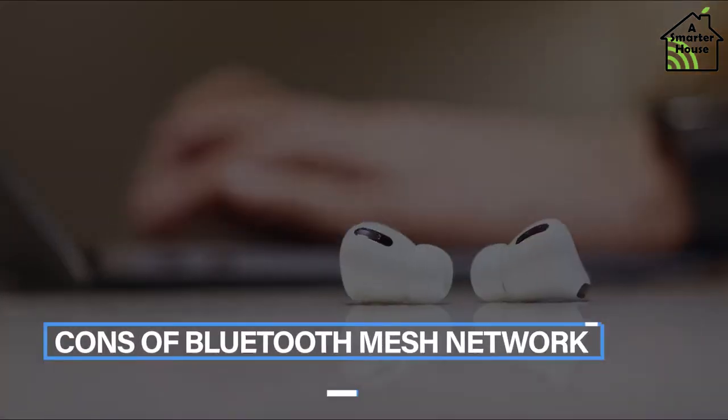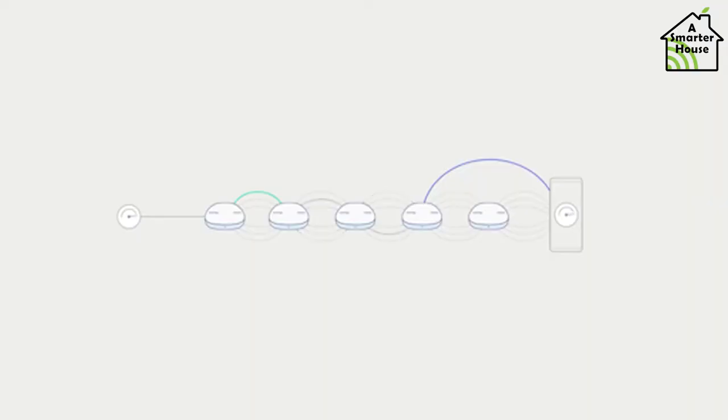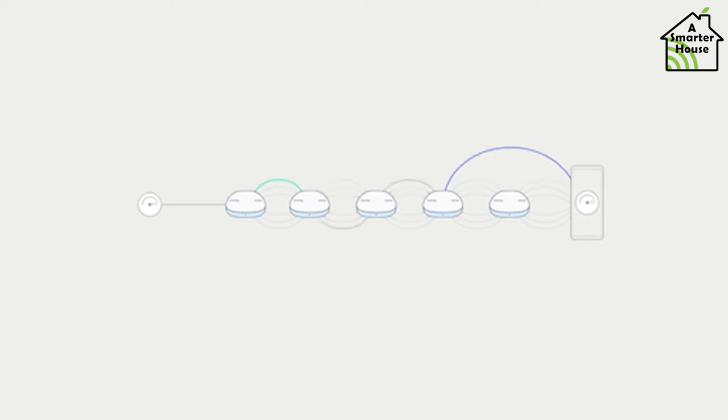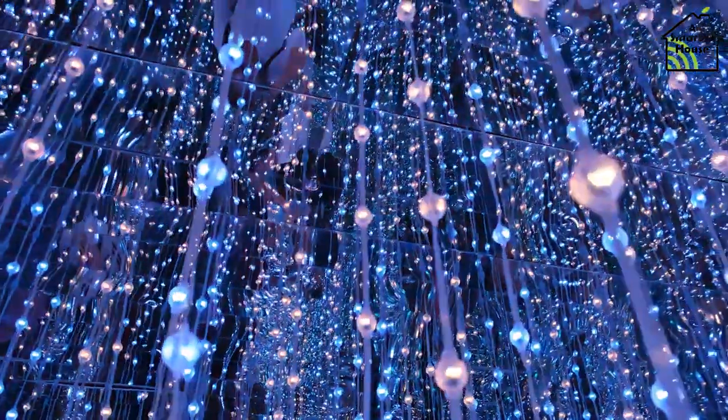Cons of Bluetooth Mesh Network: Bluetooth Mesh topology is more sophisticated and difficult to develop and maintain. Bluetooth Mesh is not suitable for audio and video transmission. Because Bluetooth Mesh has a lesser bandwidth than Wi-Fi, it is employed for the transmission of small-size commands needed for open and close functionalities, such as lights on and off.